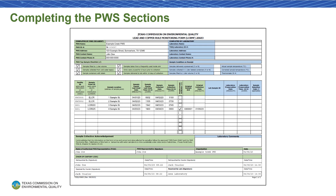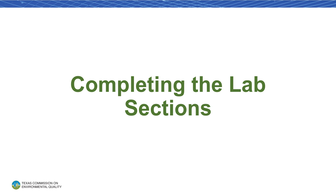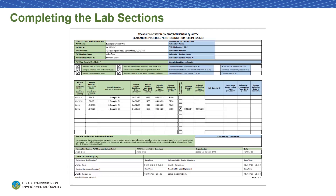Your receiving lab should complete the sections in blue. In the following part of this video, we will walk through how to complete these lab-specific sections. We will walk through the completion of the lab portion of the Lead and Copper Rule monitoring form — the sections marked in blue. For the purposes of this walkthrough, an example of PWS information has been filled in already.